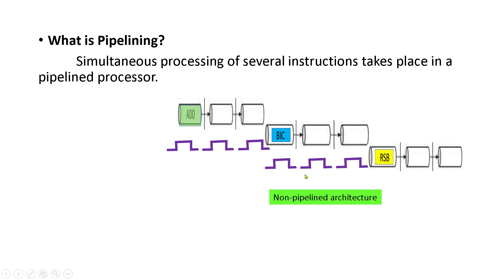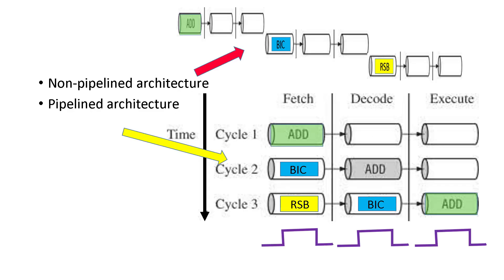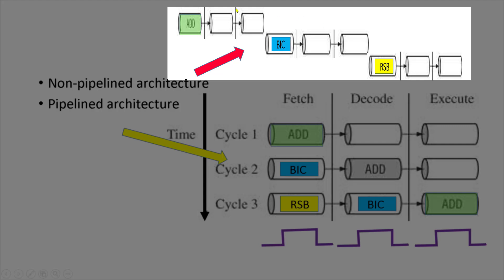Now we are going to see what is pipelined architecture. What is pipelining? To speed up the execution of a program, the pipeline technique is used. In pipelining, the fetching, decoding, and execution of instructions are done in an overlapped manner. Therefore, in pipelining, simultaneous processing of several instructions takes place. In non-pipelined architecture, it took nine clock cycles to execute three instructions.